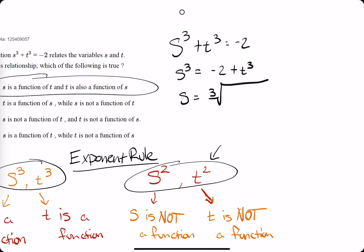And when we do that, we get the cube root of negative 2 plus t cubed. And so the idea is that s is now a function of t.